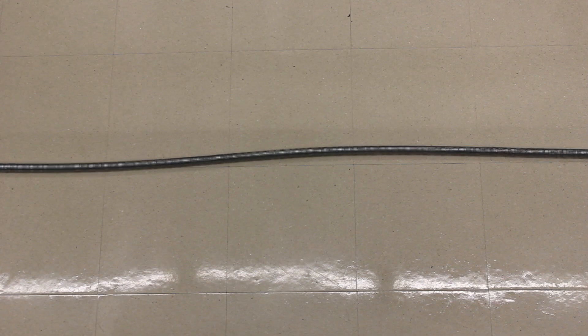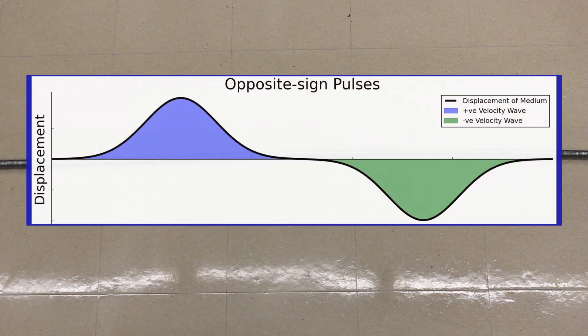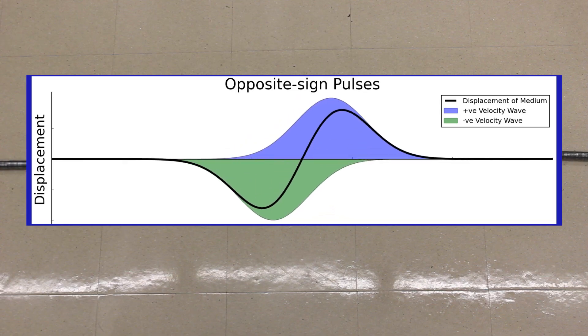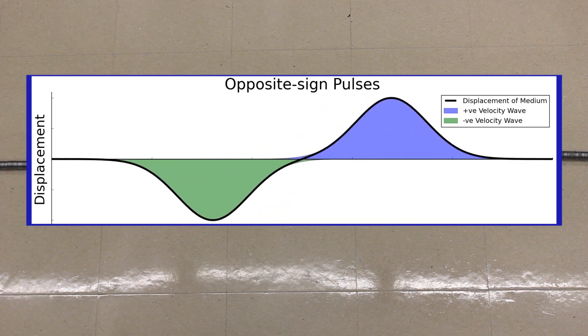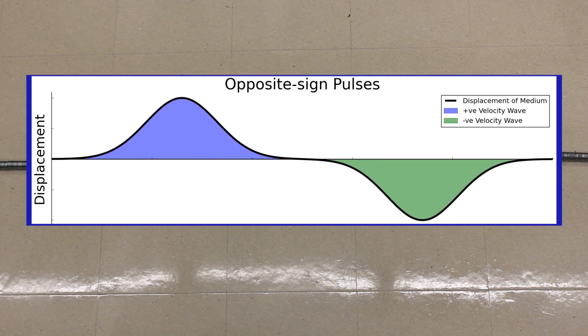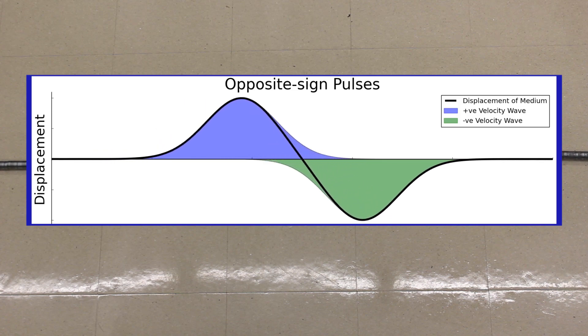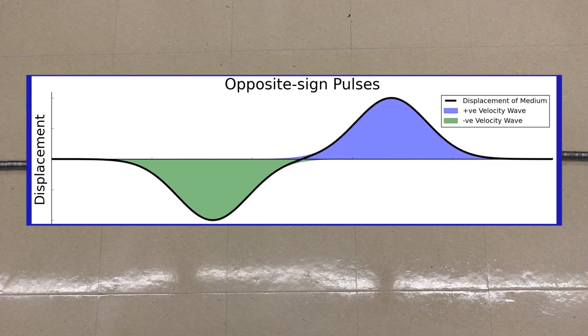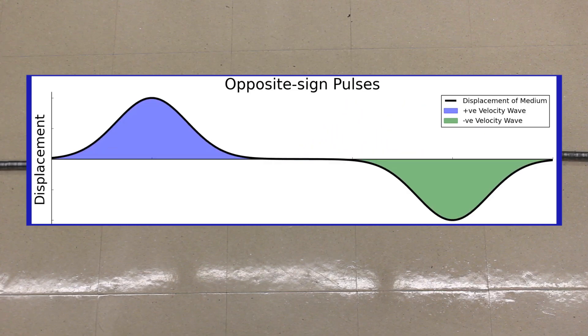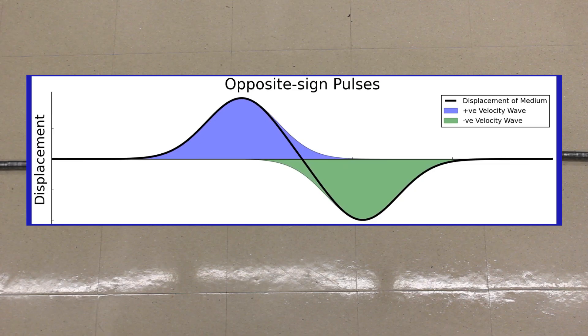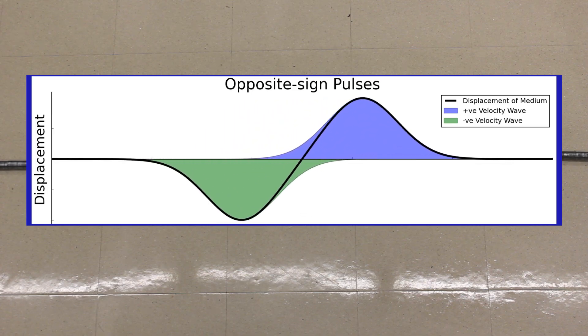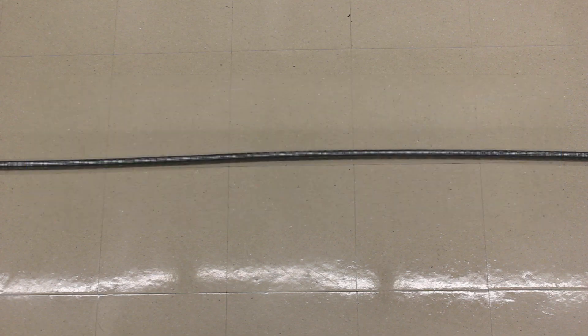So, what you should have seen there is that the two pulses pass through one another. They don't meet and cancel out and stop but when they do meet in the center, the string almost returns to its equilibrium position. That won't be precise in this case because the two pulses that we're generating are not identical. So, there won't be a perfect cancellation for that brief instance in the center. But there should be a pretty good cancellation. So, we'll try that another couple of times. Look for the cancellation in the center and look for the pulses passing through one another.